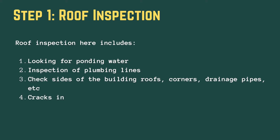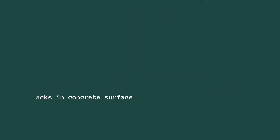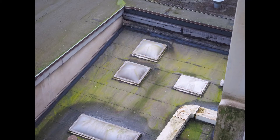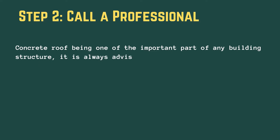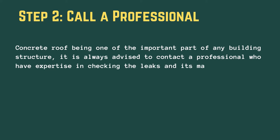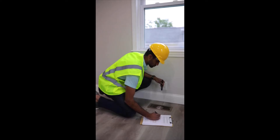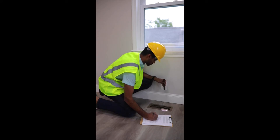Leaks may not be visible to the eye in every case. As concrete is permeable, a water drainage issue or water collected at one point can result in a leak at another point. Concrete roof being one of the most important parts of any building structure, it is always advised to contact a professional with expertise in checking leaks and their main causes. You can do your homework on finding roof leakage issues, but in more complicated situations, professional advice is the best choice.